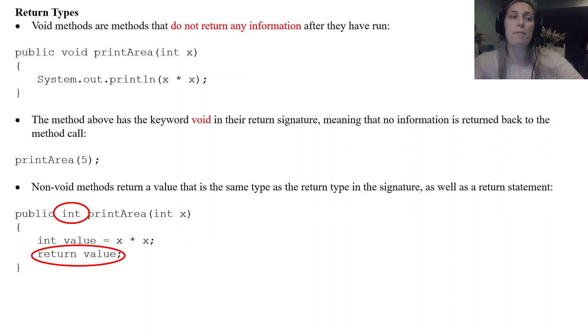Now how does this change our method body? Well if I have an int value equals X times X, X times X whatever I end up passing it gets stored in value which is an integer. And then as the very last line in my method body I'm going to return value. Okay now value is a variable it's going to contain some value and it's an integer. So I'm returning an integer value.